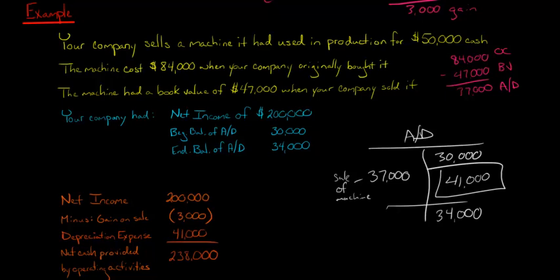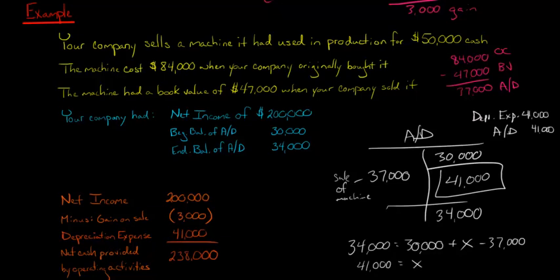So now we need a plug here. What would we have had to have credit this for to get to $34,000? And the answer is $41,000. And if we're crediting accumulated depreciation for $41,000, what would have been the associated debit? It would have been depreciation expense because we debit depreciation expense generally when we record depreciation, and then we credit accumulated depreciation. So that's what it's saying. There was an entry that was made, $41,000 debit to depreciation expense, $41,000 to accumulated depreciation. If you want to set up an equation, too, you could also say the ending balance of $34,000 is equal to $30,000 plus X, which is whatever the accumulated depreciation that would have been credited because of the depreciation expense, then minus $37,000. And then if you solve that algebraically, you get to X is $41,000. So that's our depreciation expense.